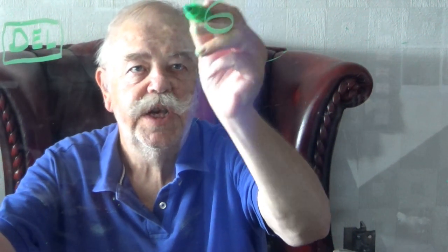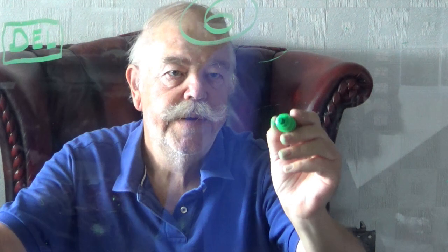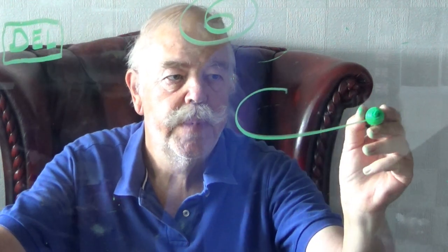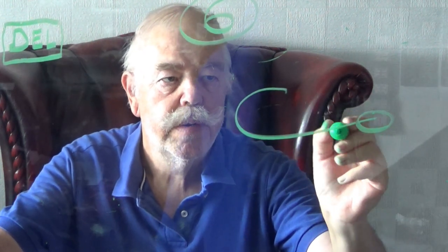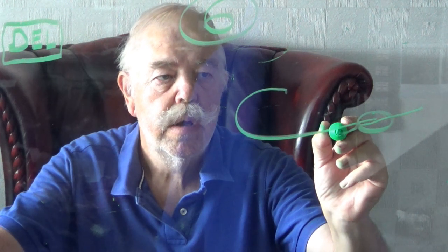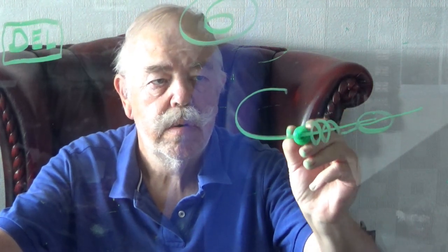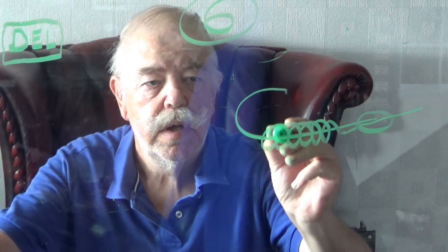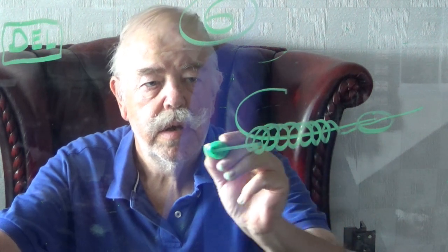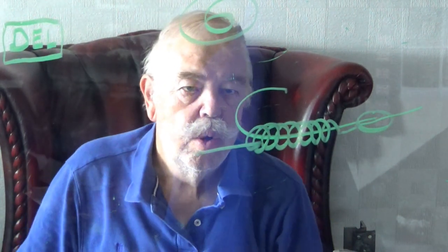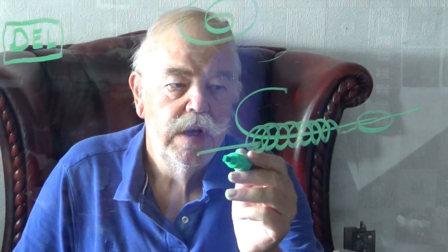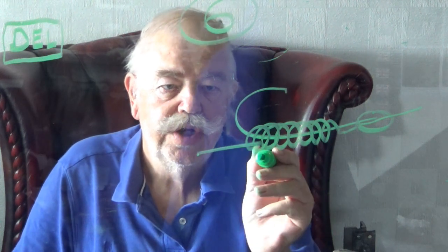Step 6: Pull the tail to tighten the knot.